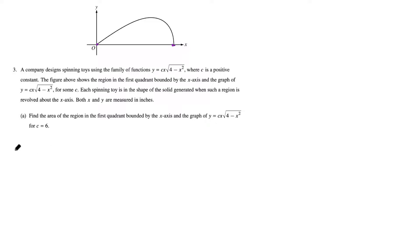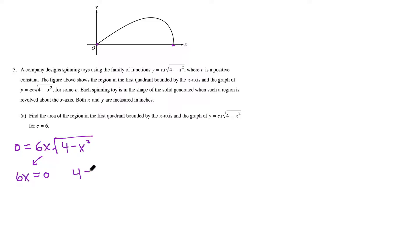We set the equation equal to 0, noting that c equals 6. Using the zero product property, we set each factor equal to zero: 6x = 0 and 4 minus x squared = 0. The first gives us x = 0 (the origin). The second gives x = ±2, and we ignore the negative solution since we're only in the first quadrant.